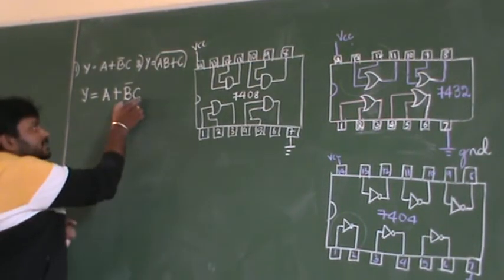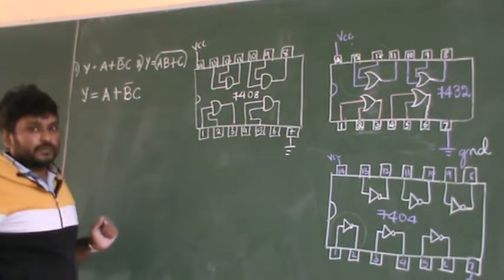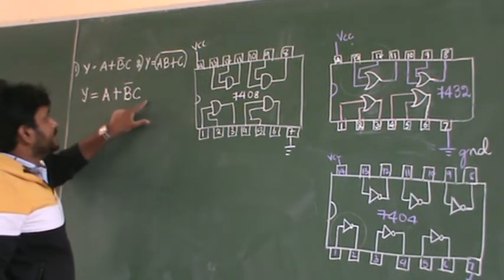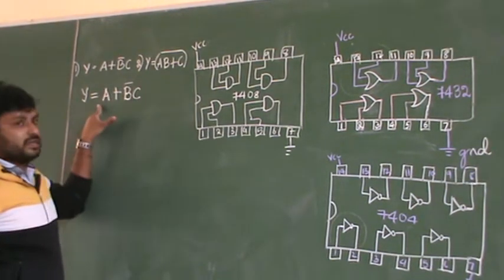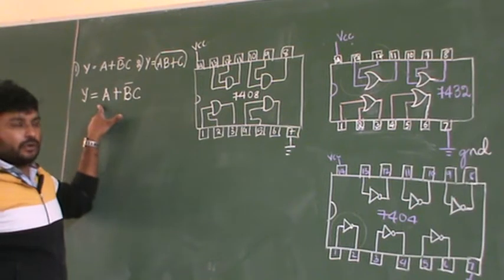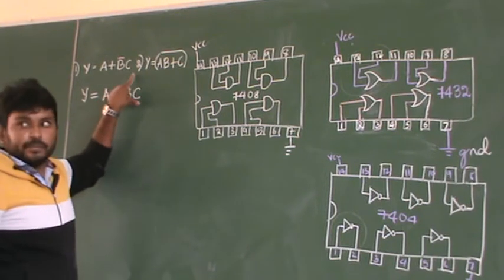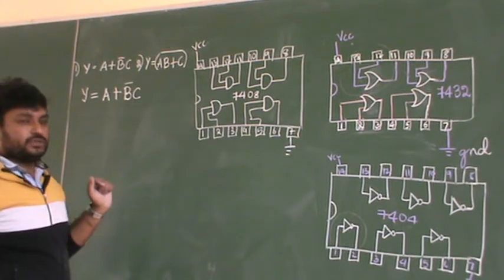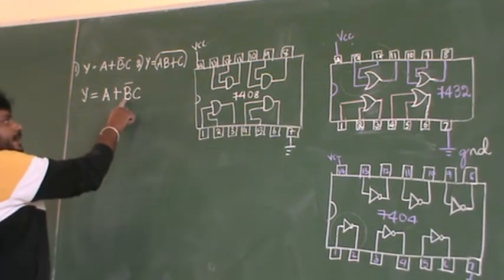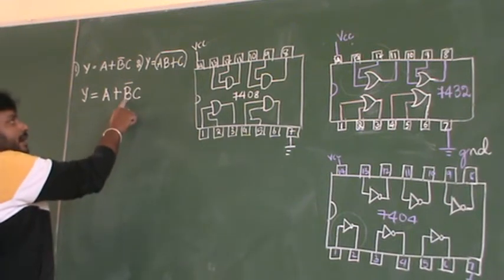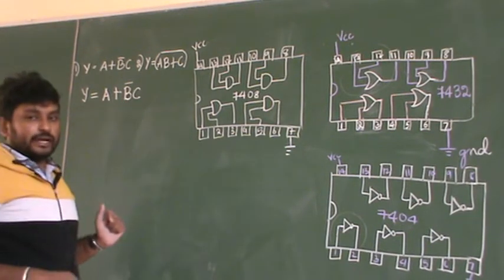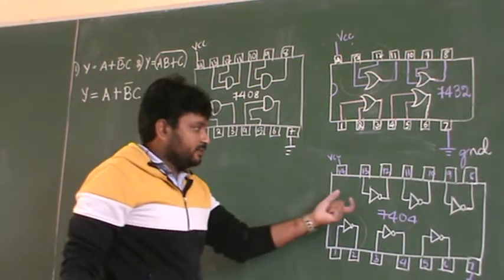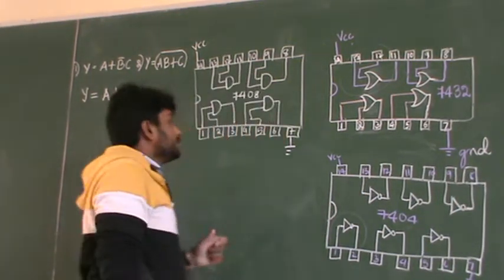First I will take the term D̄ into C. After getting this, I will then add it with the other term. So first I have to implement D̄ into C. Before writing D̄, I have to get D̄. So how to get D̄?